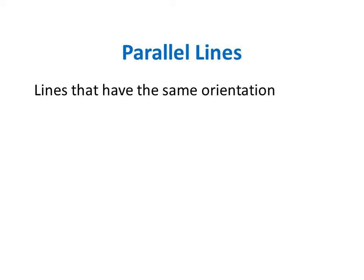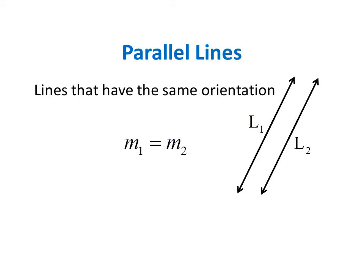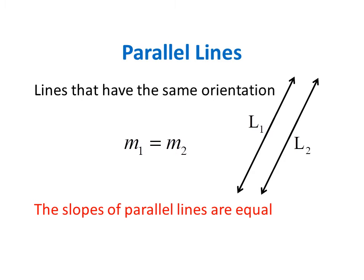Parallel lines are lines that have the same orientation. For example, line 1 is parallel to line 2. Parallel lines are characterized by this equation: the slope of line 1 is equal to the slope of line 2. Therefore, we have to remember that the slopes of parallel lines are equal.